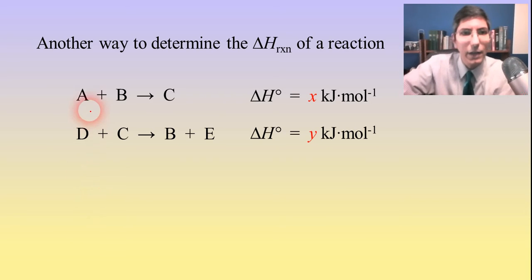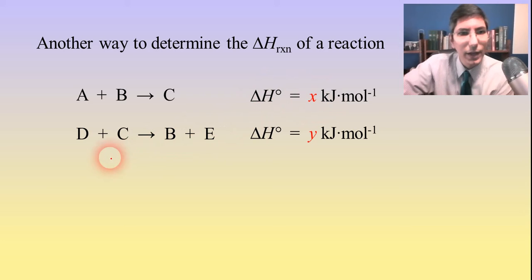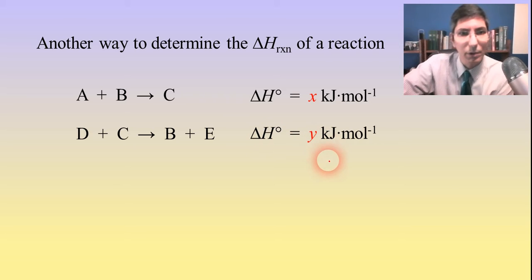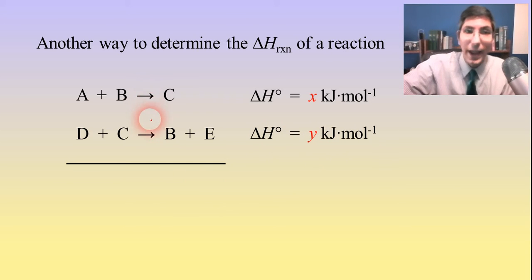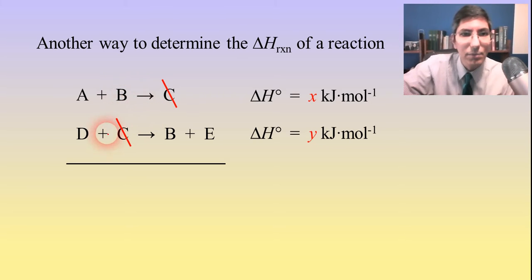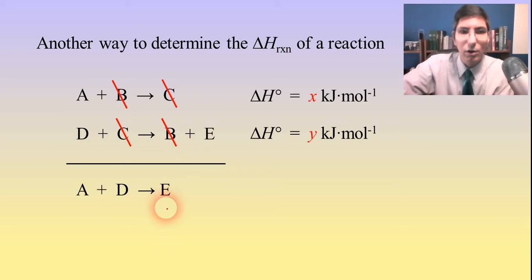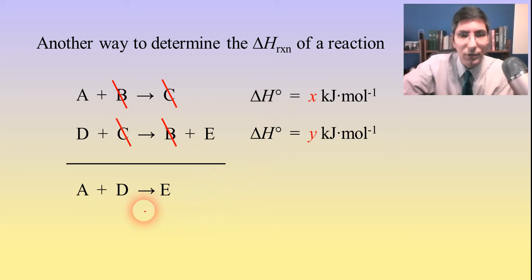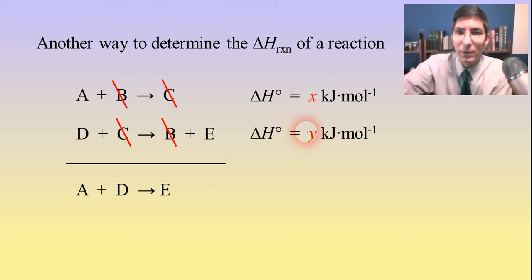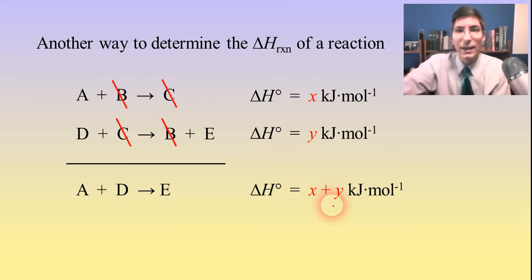For example, I have two separate reactions: A plus B yields C with delta H equal to X, and D plus C yields B plus E with delta H equal to Y kilojoules per mole. If I take these two equations and add them up, I can cancel out the C's on both sides and the B's on both sides, and the overall reaction would be A plus D yields E. The delta H of this new reaction is just the sum of the individual delta H's — X plus Y kilojoules per mole.